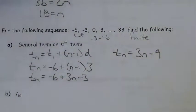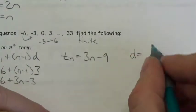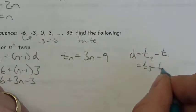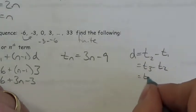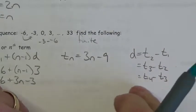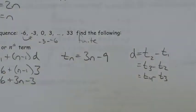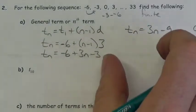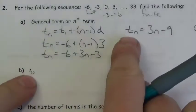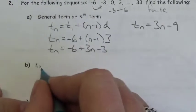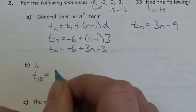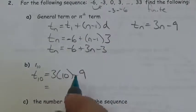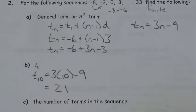To get d, I took the second term and subtracted the first term — or any two consecutive terms and find their difference. Now finding the 10th term specifically: replace N with 10, so it's 3 times 10 minus 9, which is 30 minus 9 — the 10th term is 21.